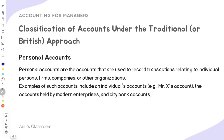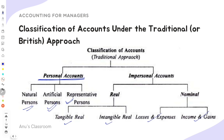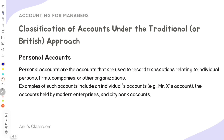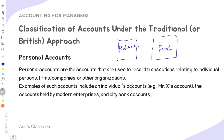Personal accounts can belong to a natural person, an artificial person, or a representative person. For example, Mr. X's account, a City Bank account, or another business's account are all considered personal accounts, because businesses are also treated as a separate entity. So if Reliance is doing a business transaction with Airtel, then in Reliance's books of accounts, Airtel would be a type of personal account.